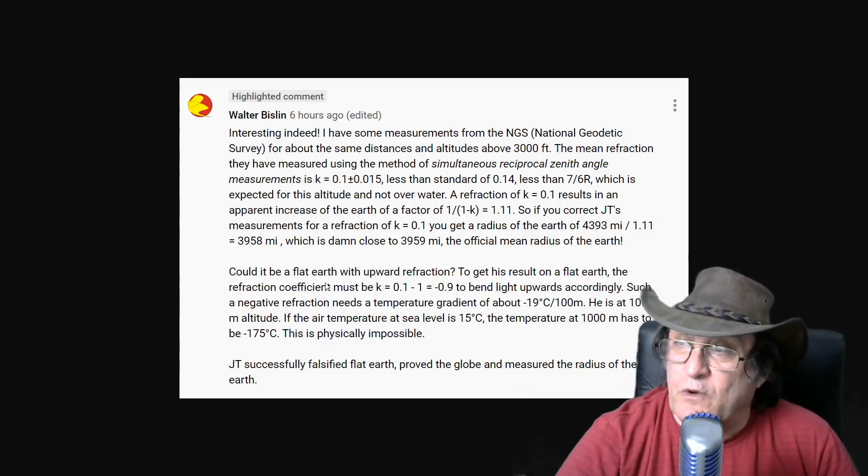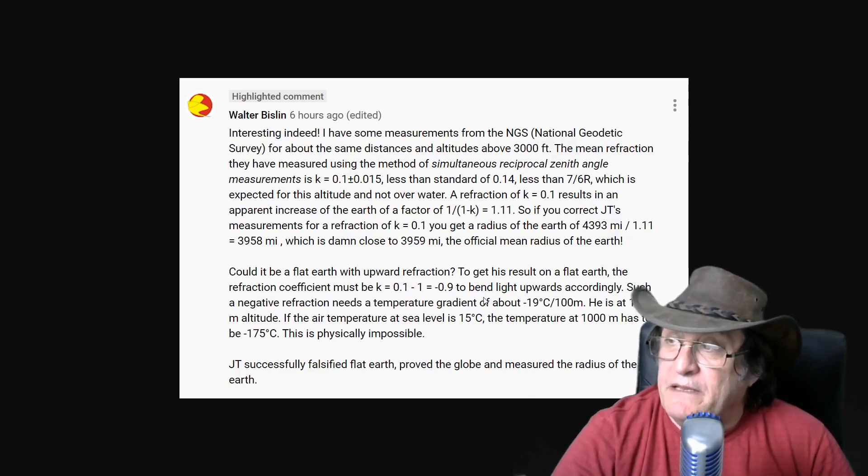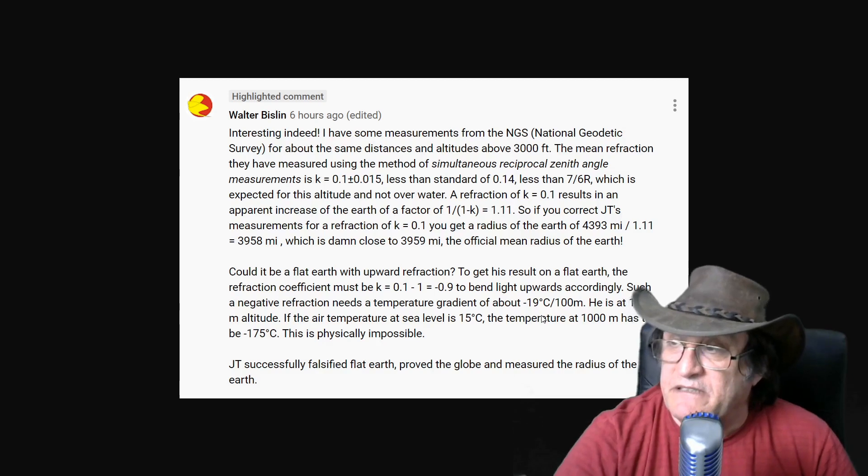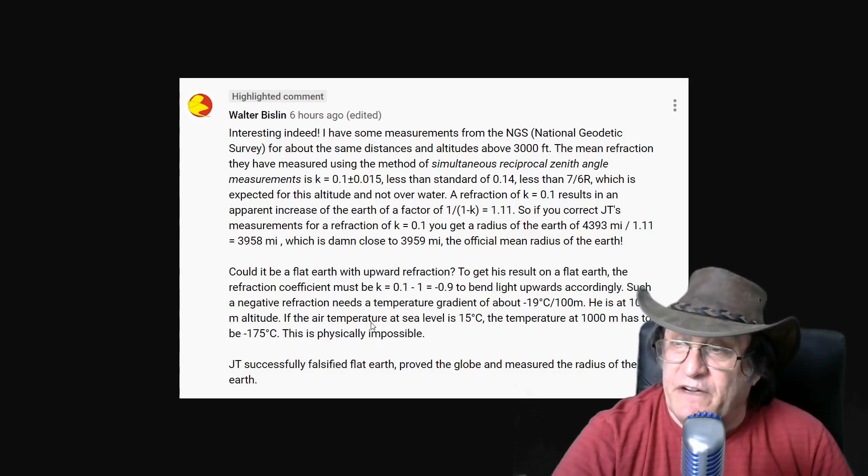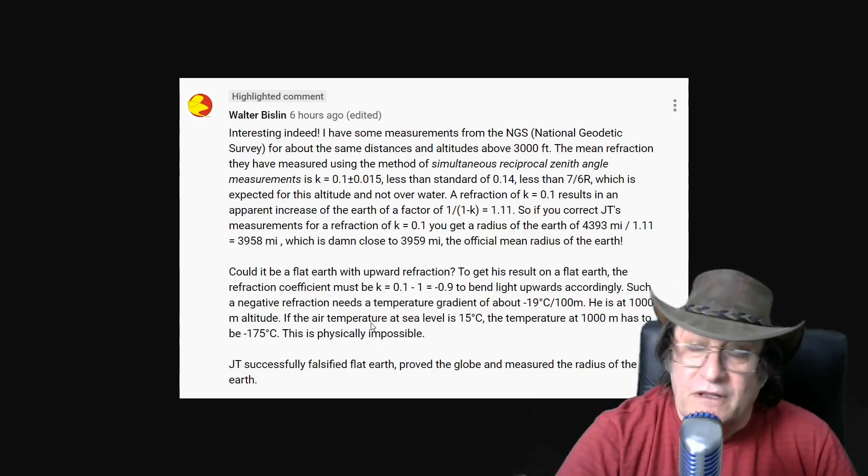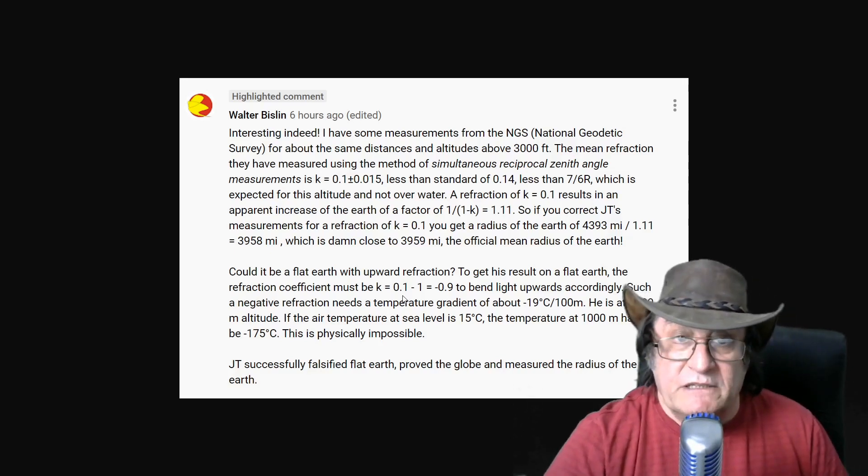And he's also answered the question about, could it be a flat Earth with upward refraction? And actually, if you do the numbers, to bend the light upwards accordingly, it needs a temperature gradient of about minus 19 degrees C per 100 meters. So he's at 1,000 meters in altitude, and if the air temperature at sea level is 15 degrees, the temperature at 1,000 meters has to be minus 175 degrees. So it is physically impossible for the refraction to work in flat Earth's favor. To make that angle, to make that top of that mountain come down that much is a physical impossibility.